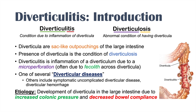The etiology of diverticulitis is due to the development of diverticula in the large intestine. The development of these diverticula is due to increased colonic pressure and decreased bowel compliance. Ten to twenty-five percent of patients with diverticulosis will develop diverticulitis.